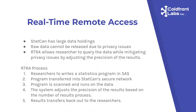RTRA is a program that allows researchers to query all the data while mitigating privacy issues by adjusting the precision. The system looks at the result set before it's returned and says, for example, 'you got data about only 10 people,' so it gives results in groups of 50 instead of an exact count. If you're taking a percentage of 10 people, the best precision might be to the closest 5%. So it mitigates privacy issues through how it handles rounding.